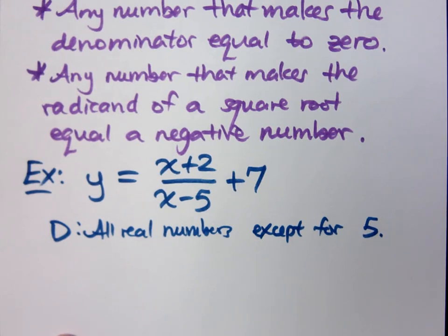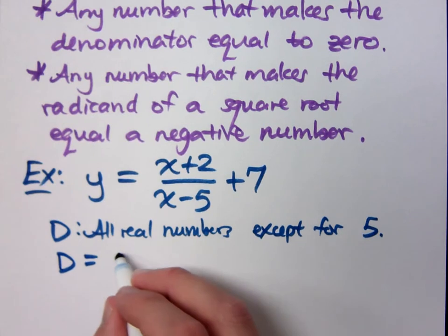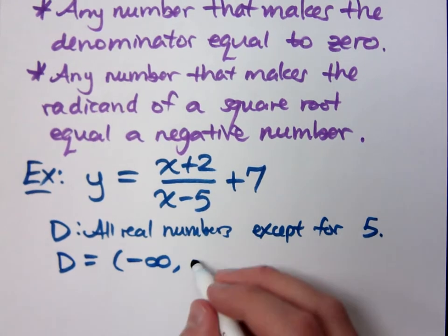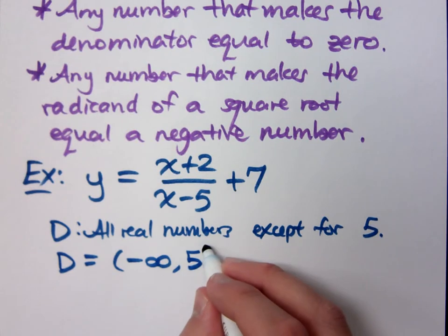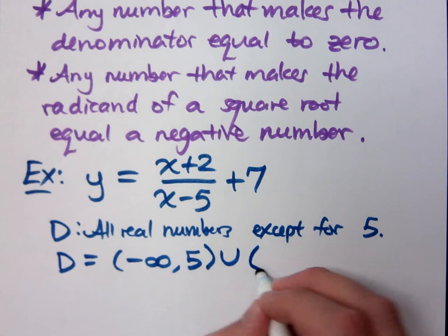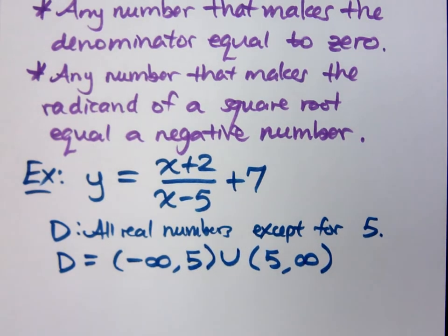Any number you want to plug into this is going to be okay for x, except what makes the denominator equal zero, which is positive five. The way you would describe this for your domain would be from negative infinity to five, parentheses, and then join this with union (5, infinity).